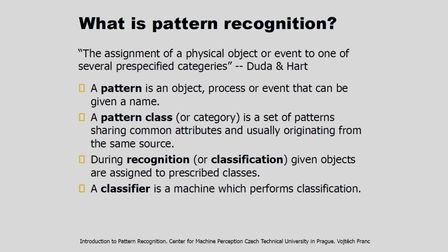A pattern is an object, a process, or an event that can be given a name — for example, an electrical signal, a speech signal, or a fingerprint image. A pattern class is a set of patterns sharing some common attributes and usually originating from the same source. During recognition or classification, given objects are assigned to the prescribed classes. Pattern classes are represented as omega_1, omega_2, etc. A classifier is a machine that performs recognition or classification.